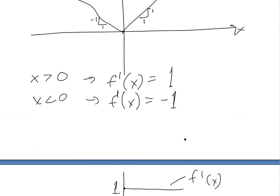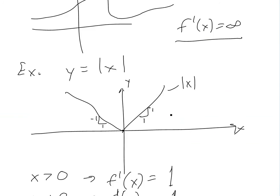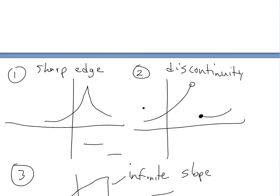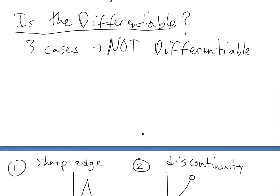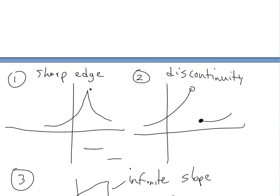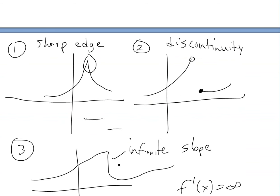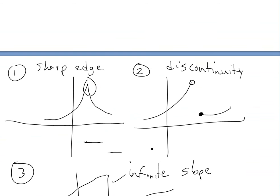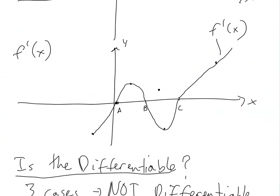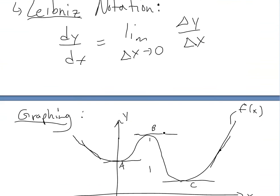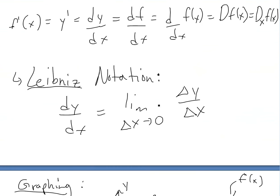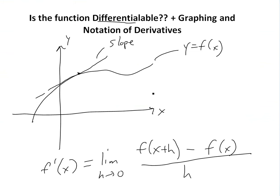So that was just one example. Hopefully you learned about whether a function is differentiable: if it has a sharp point, a discontinuity, or an infinite slope, it's not differentiable. That's also an easy way of graphing the derivative, and we covered some notation. Thanks for watching and stay tuned for another math easy solution.